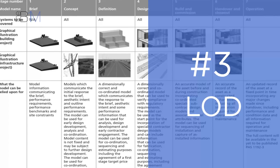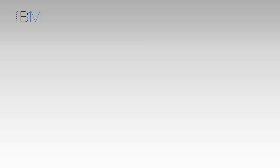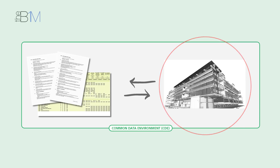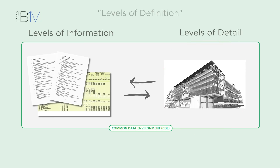Closely followed at number three is LOD, which means Level of Detail. It describes the amount of graphical or 3D data within an information model at any point in the project. Collectively, Level of Detail and Level of Information are termed Levels of Definition.